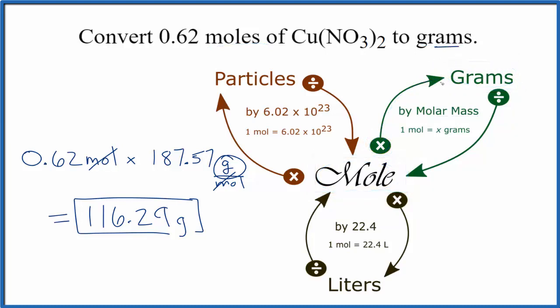If you were given grams and asked to find moles, you'd do the reverse. You'd take the grams, divide by the molar mass, and that would give you moles.